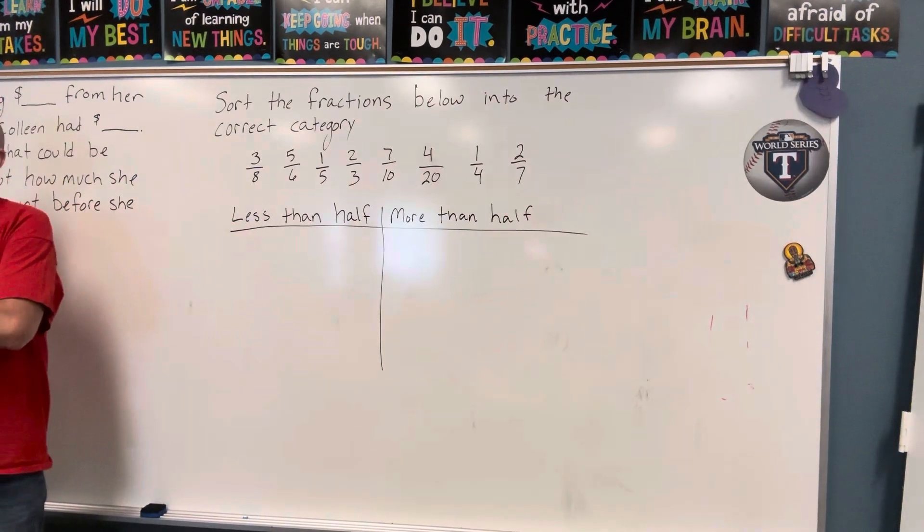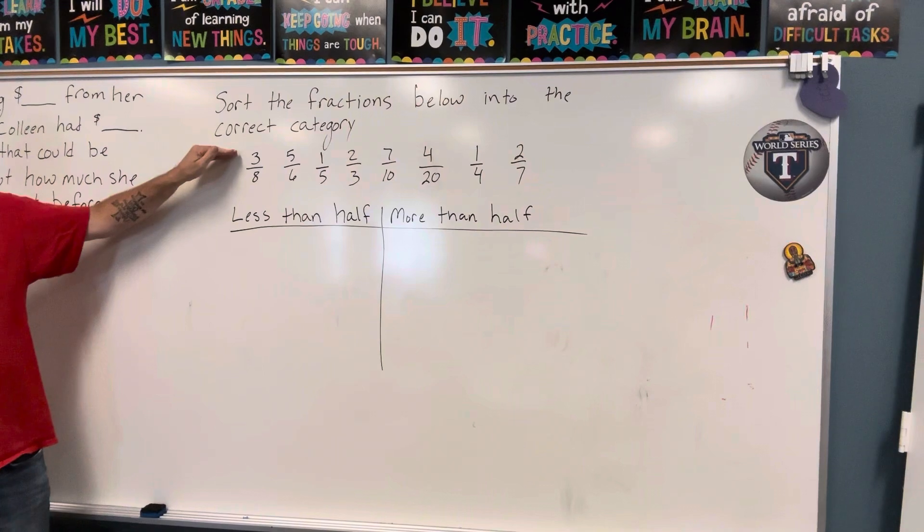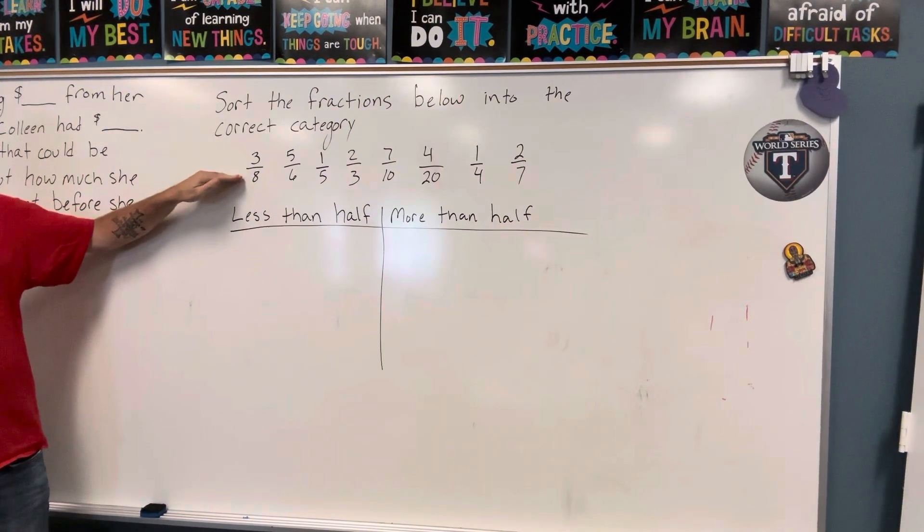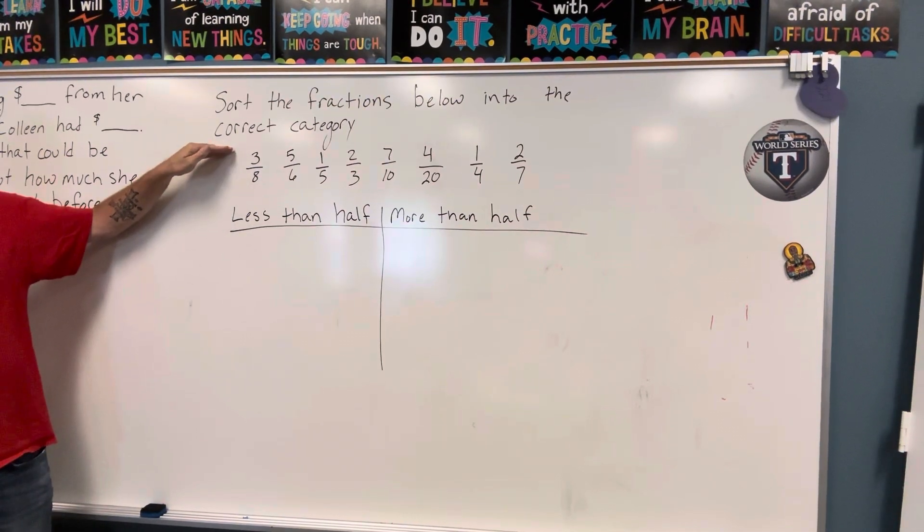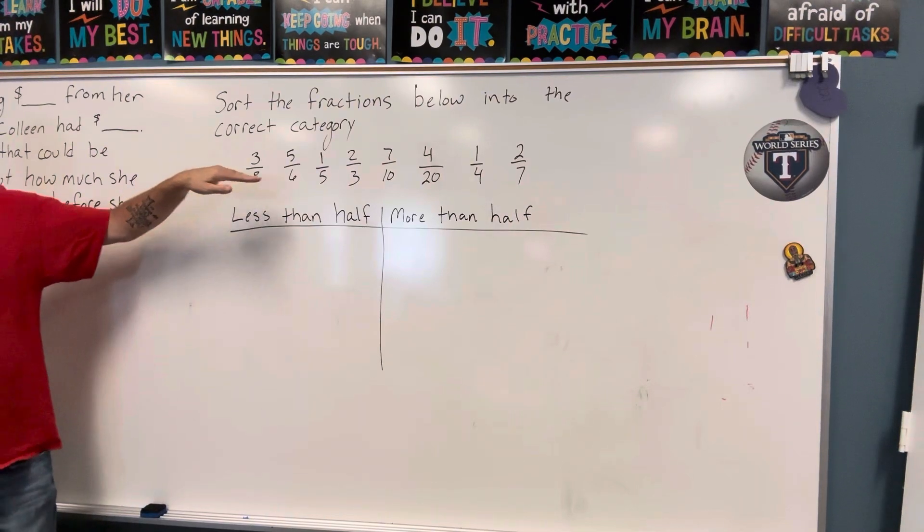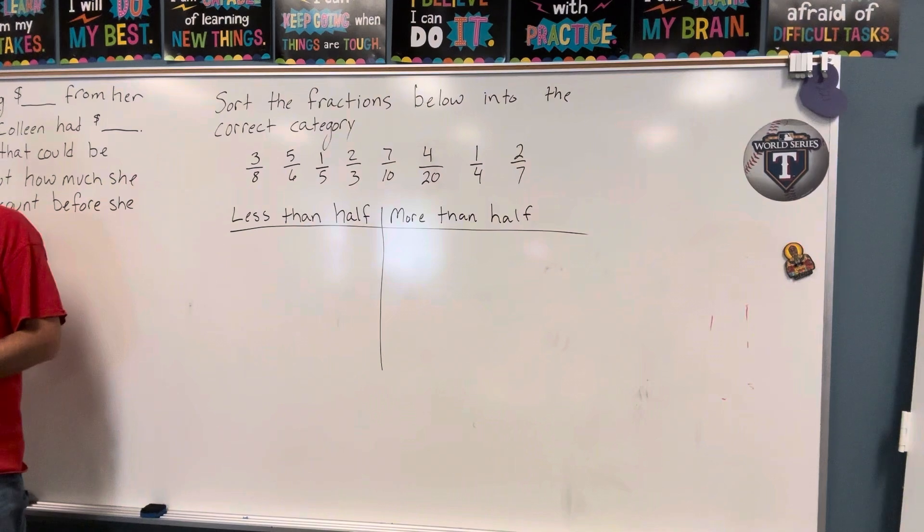Okay. So if your numerator, which is the top number, is exactly a half of your denominator, then that fraction equals a half. If your numerator is less than half of your denominator, it's less than a half. If your numerator is more than half of your denominator, then it's more than one half.